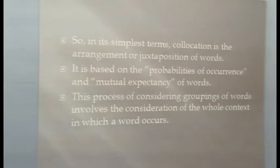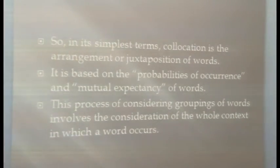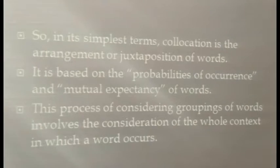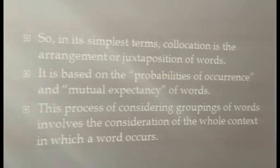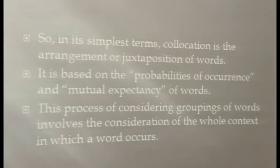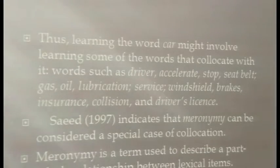While words like affairs, plan, and policy are called the collocates or the span of economy. In the simplest terms, collocation has to do with the arrangement or juxtaposition of words. Collocation is based on the probabilities of occurrence of words or the mutual expectancy of words. What collocation predisposes is that grouping words involves considering the whole context in which the word occurs.